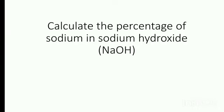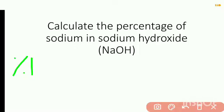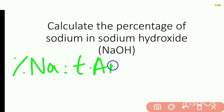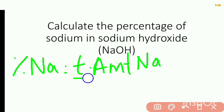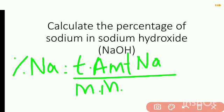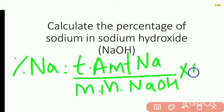Calculate the percentage of sodium in sodium hydroxide. To calculate the percentage, the formula will be: total amount of sodium in sodium hydroxide divided by molecular mass of sodium hydroxide, multiplied by 100.